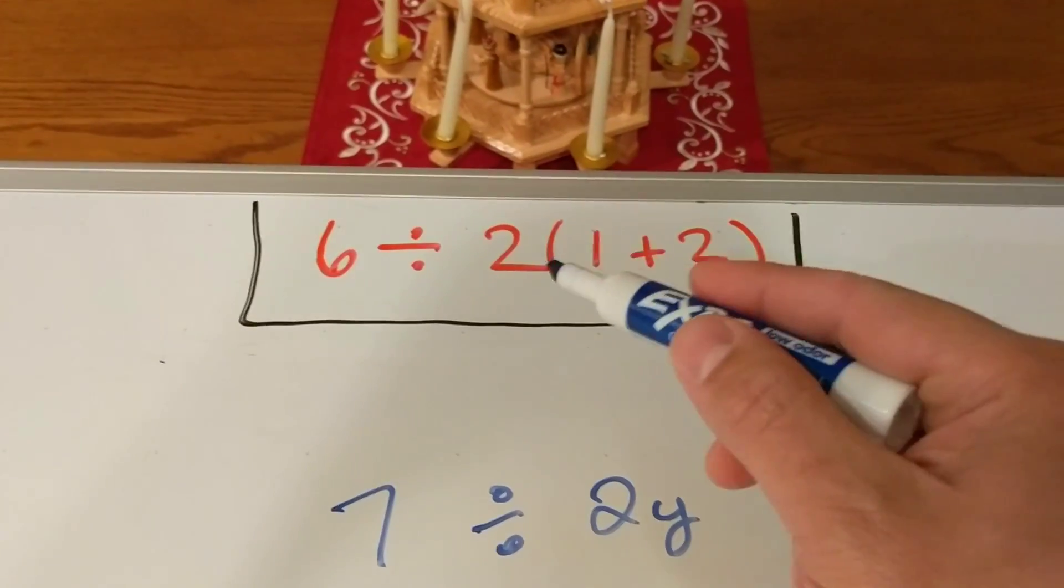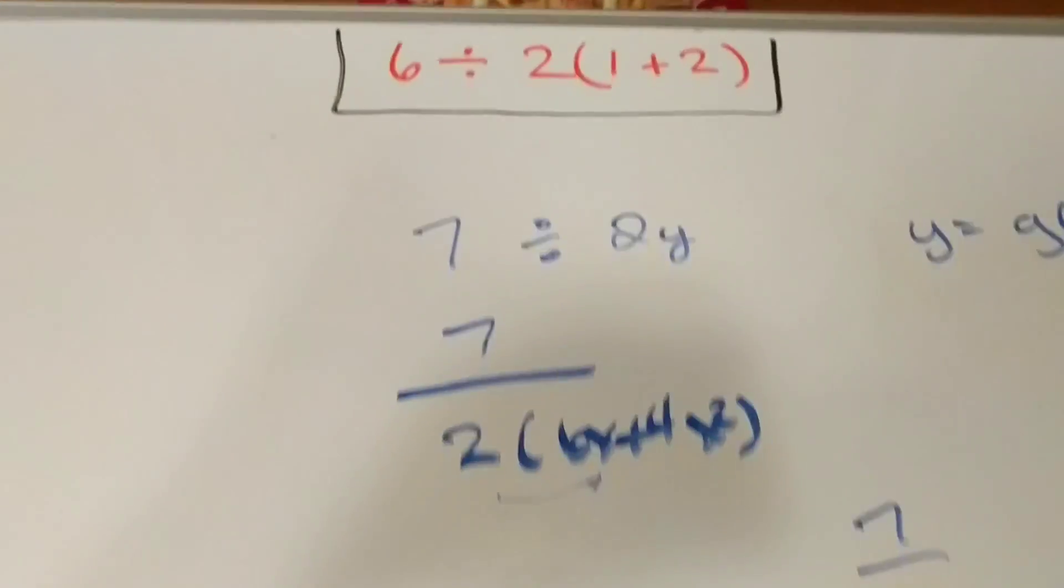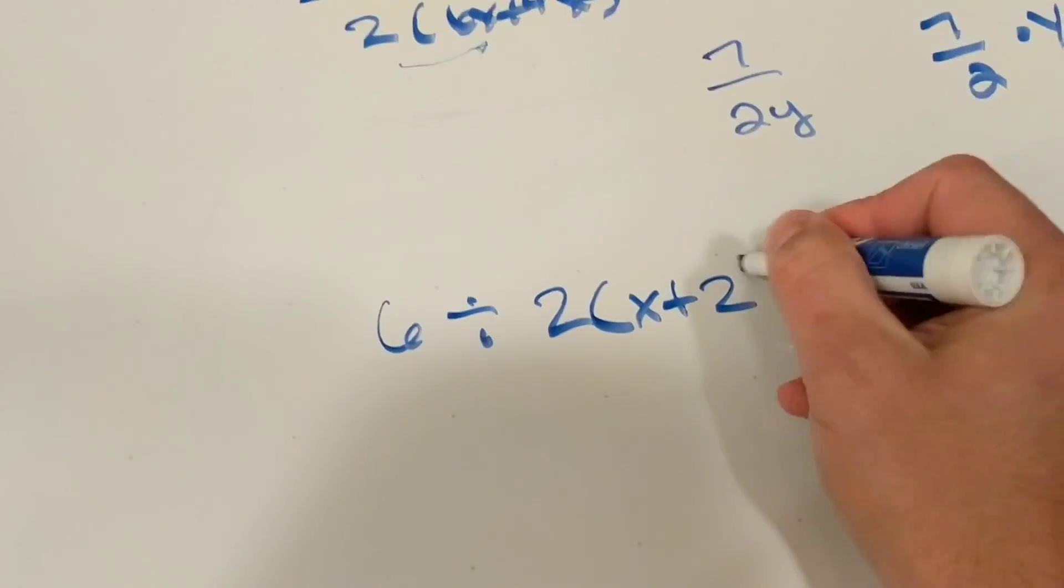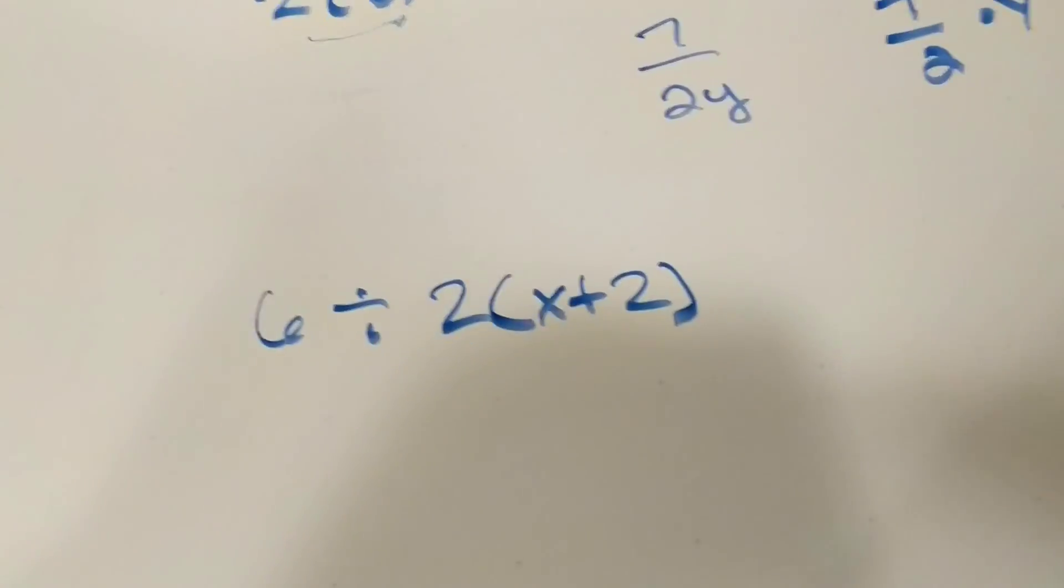You'll see that again we have parentheses. That very easily could be 6 divided by 2 times x plus 2, or x would represent anything.